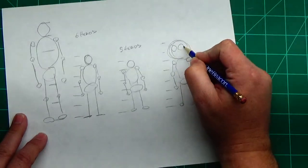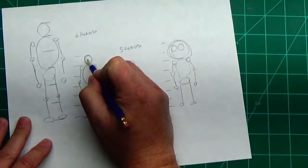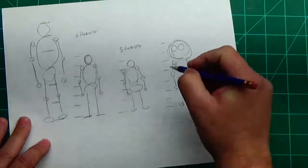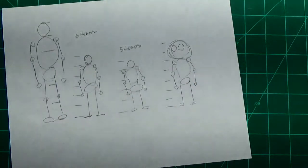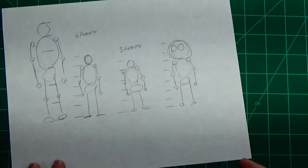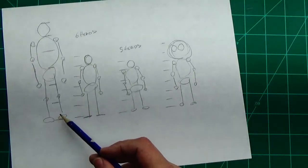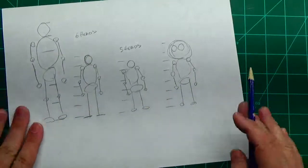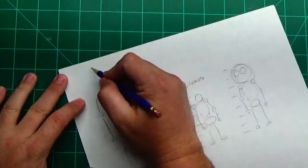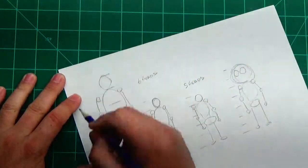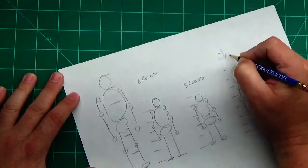You actually do bigger eyes too for a kid than you would for a normal person. A normal person, we'll get to that in heads when we do heads. But this is how you proportion out the body to draw an adult, a giant, a dwarf, and we'll put a child.